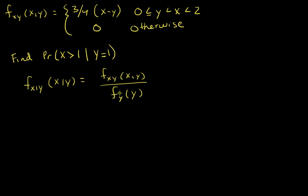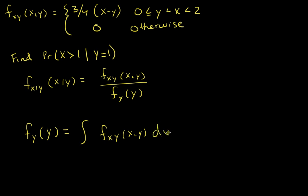So the first thing I'm going to want to do is find the marginal distribution of y. To get the marginal distribution of y, you need to integrate out x — you integrate the joint distribution over x. By definition, that's what the marginal distribution is. These two formulas are just definitions. So now let's talk about integrating over x.